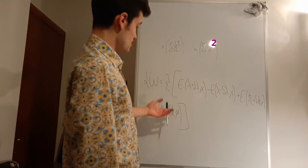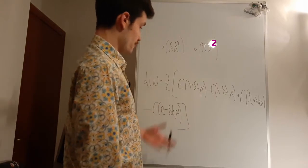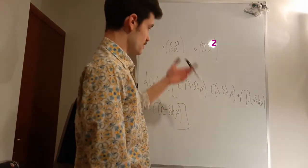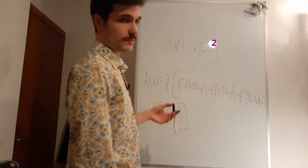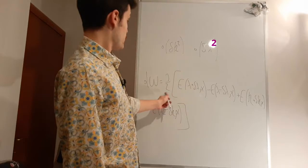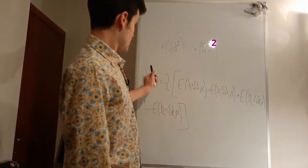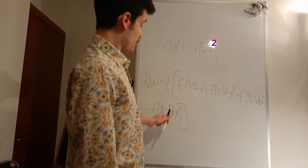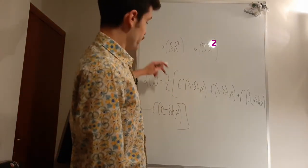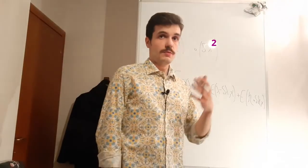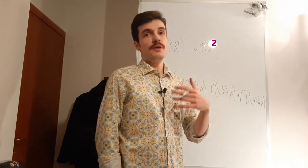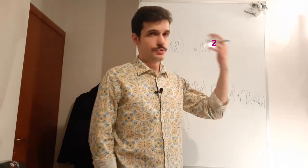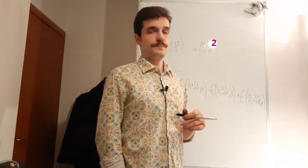In this way, using the Crooks or Jarzynski theorem, we are able to obtain the free energy estimate — specifically the free energy difference between the state before and after the creation, annihilation, or whatever transformation we perform.